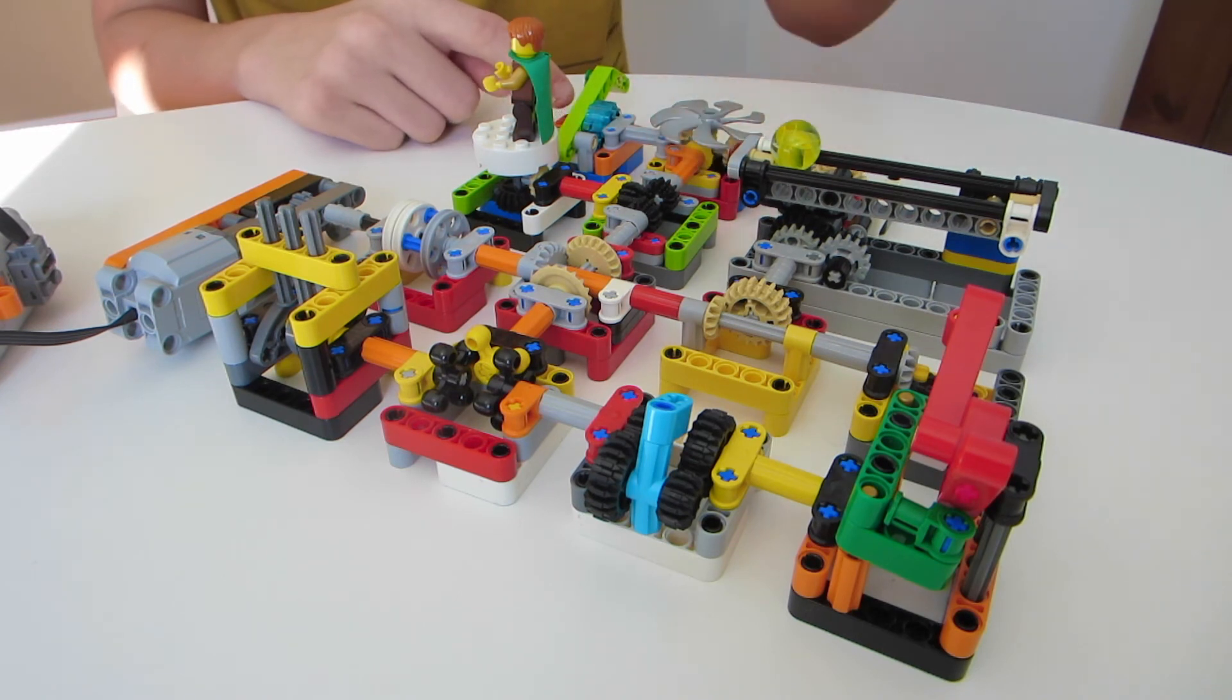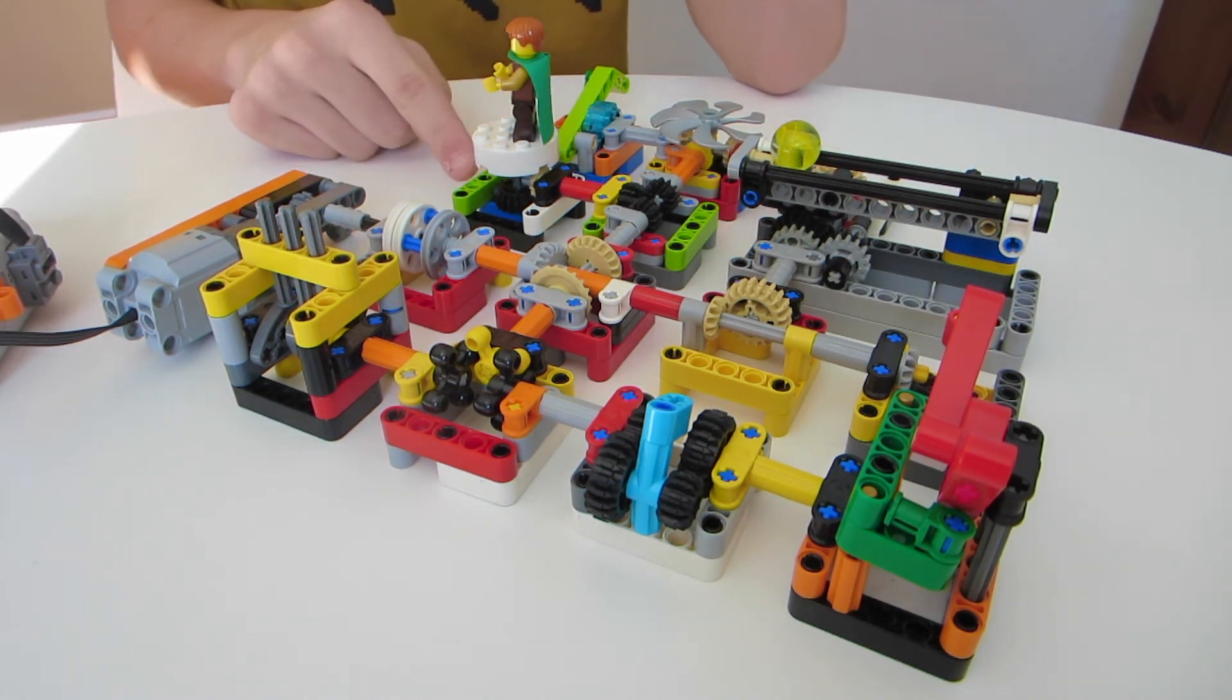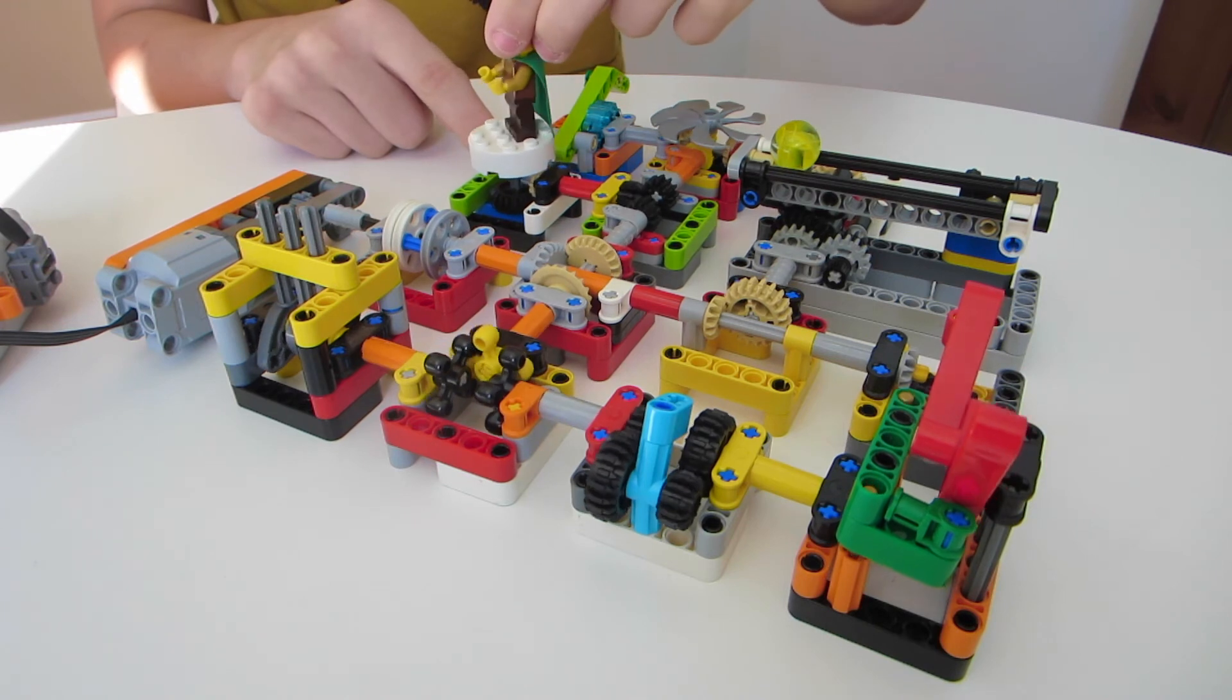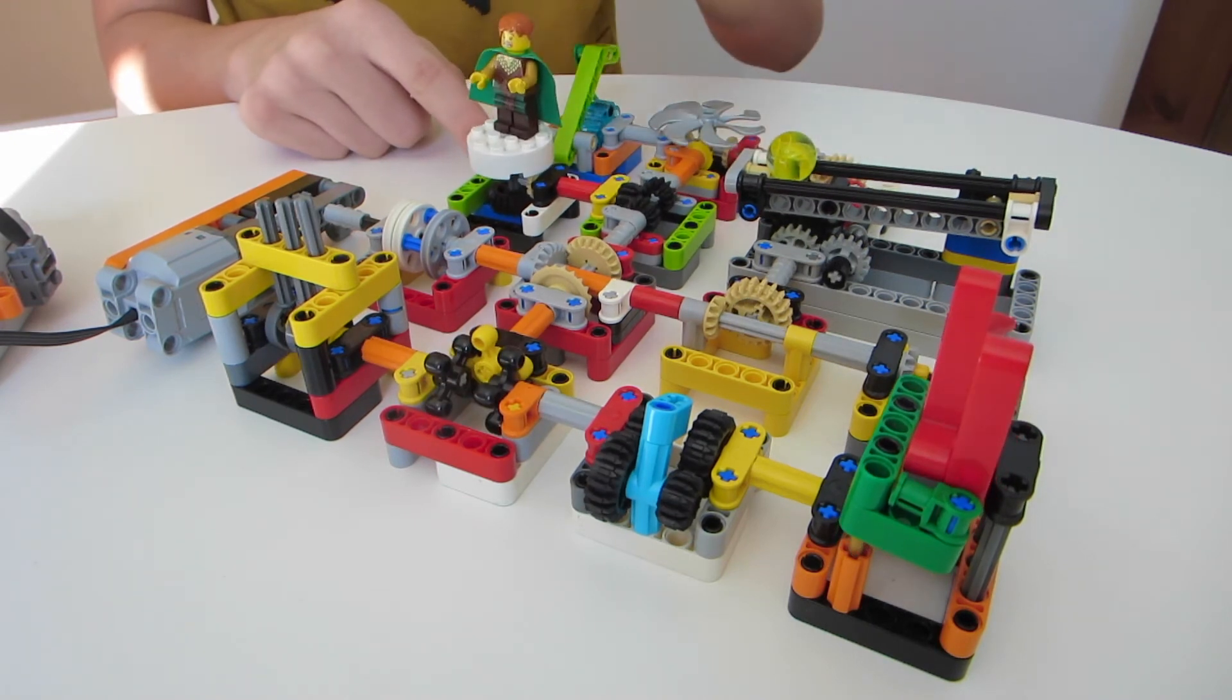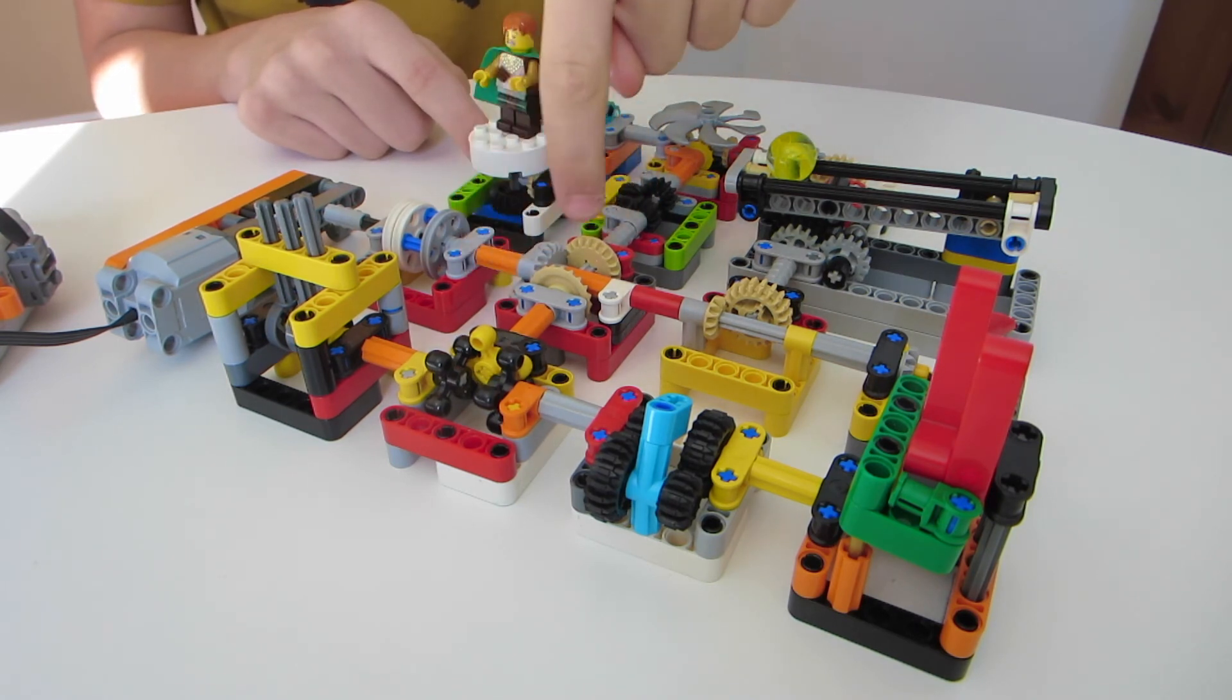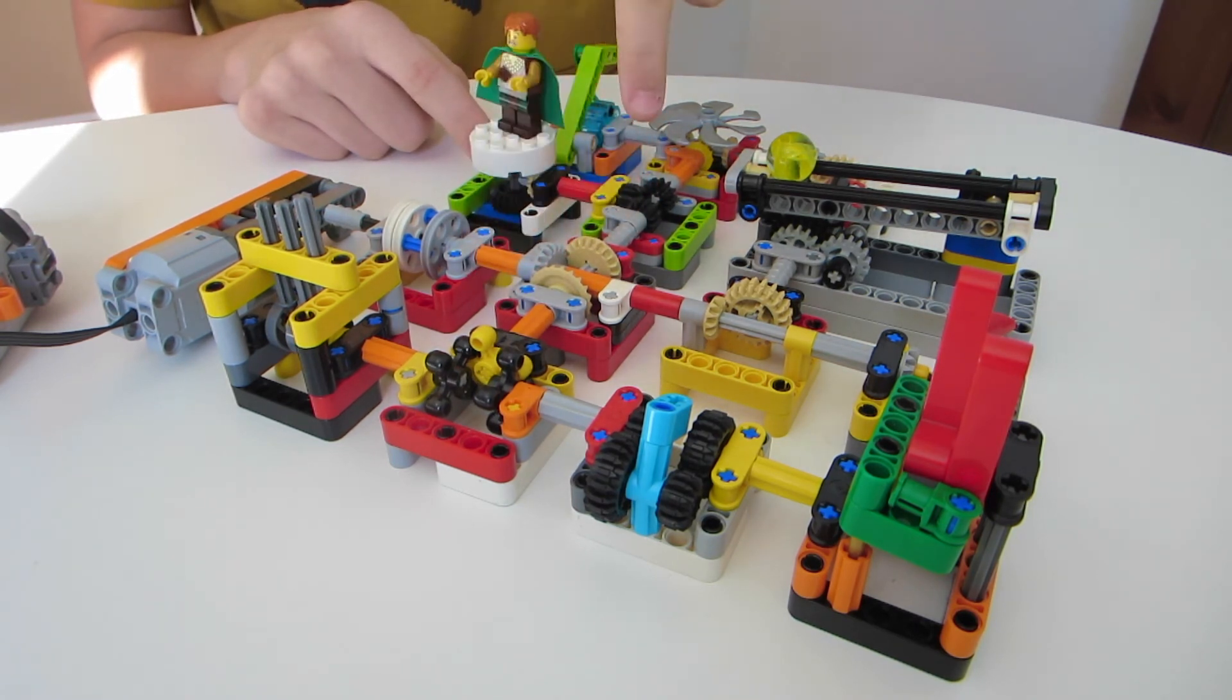And this module here, which again splits off into more directions, it spins this guy around, and based off of his facial expression, I'm pretty sure he's worried about being thrown onto the fan. And then it also sends power through our module that can take power in two different directions, remember?